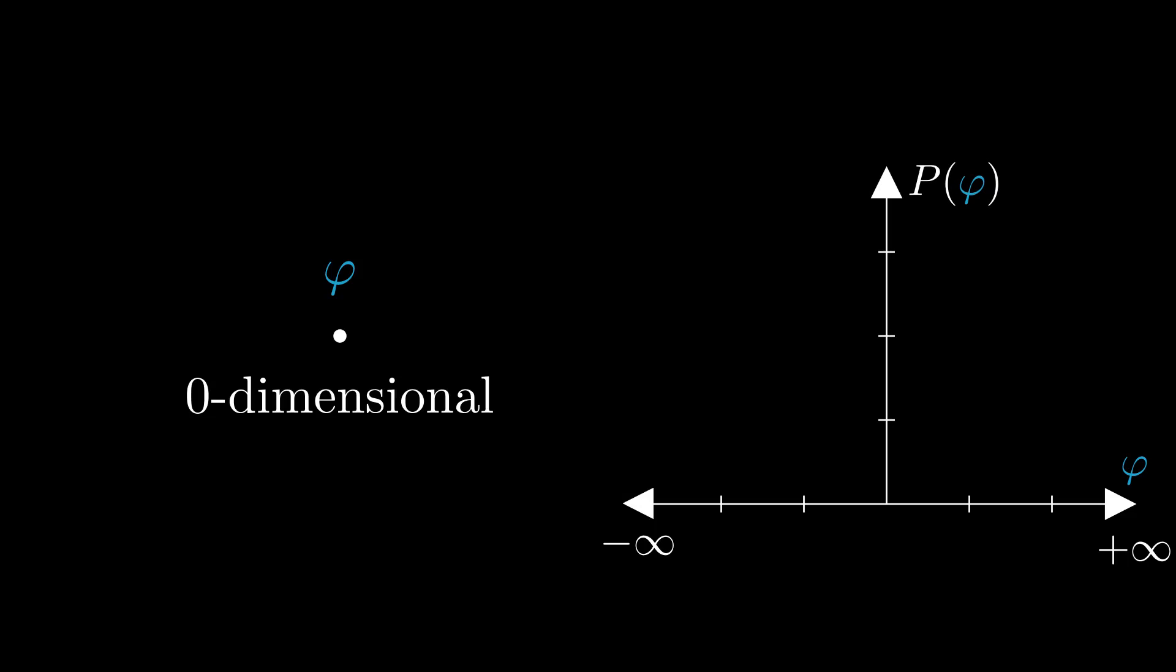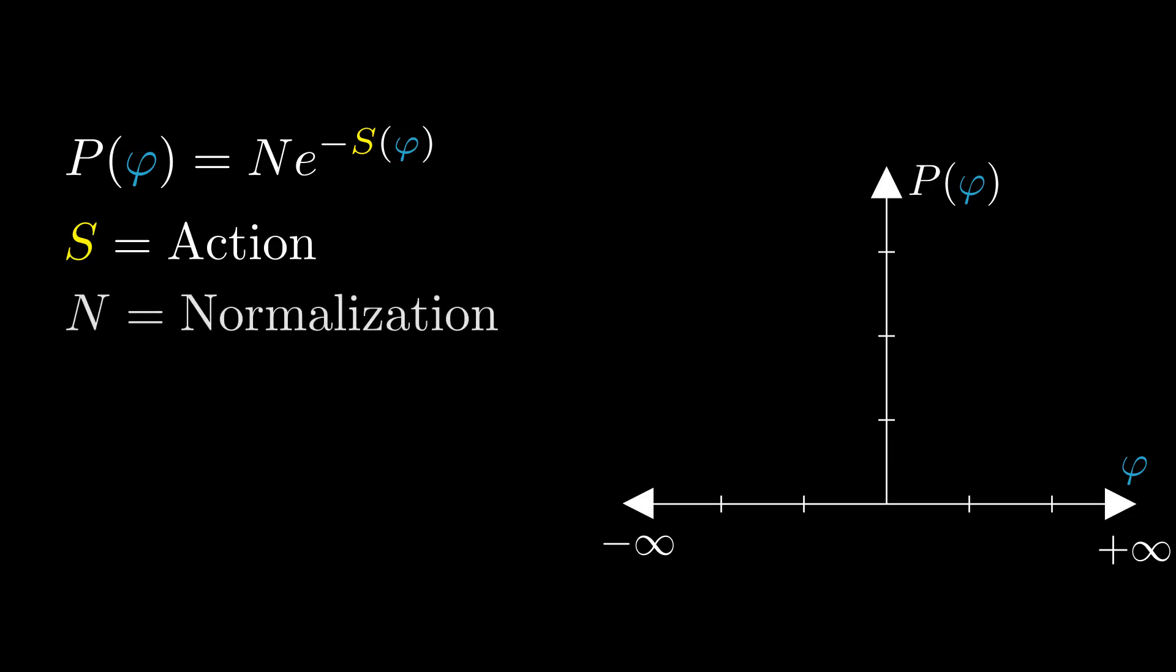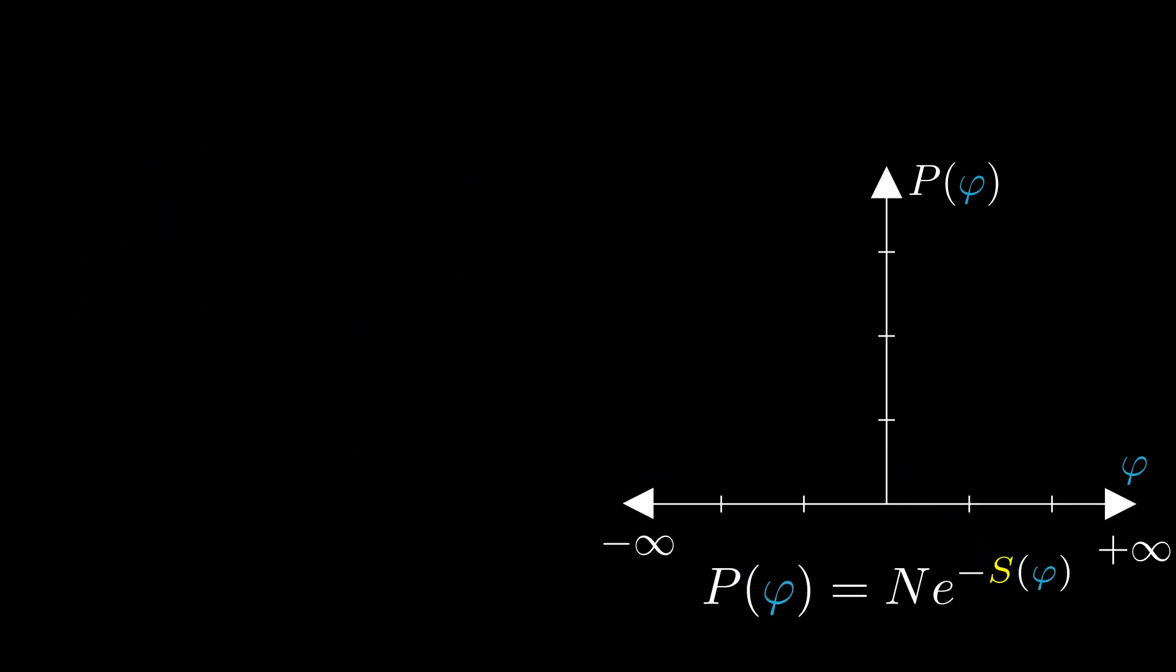Let us write this probability density, without loss of generality, as N times e to the minus S of phi, where S is called the action of our random variable, and N is a normalization constant to make sure that if we integrate this probability density, we get 1. Right now, we have written our probability density as some totally arbitrary function of phi. So let's see what kind of functions we can get by choosing a properly defined action.